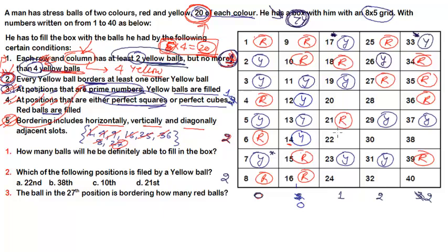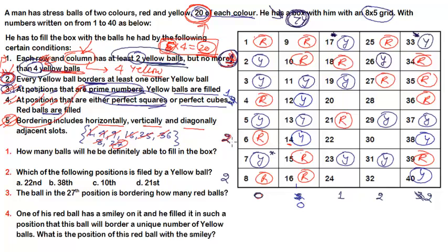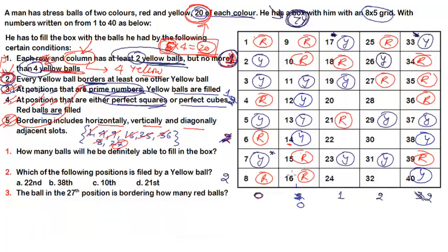Moving to column 5: two slots remain and we've placed two yellow balls. So those remaining two slots also get yellow balls. For row 6, we now see that the yellow balls are already placed at slots 14 and 38, so all other positions in row 6 get red balls. Columns 1, 2, and 5 are now complete. Columns 3 and 4 each still need one more yellow ball.